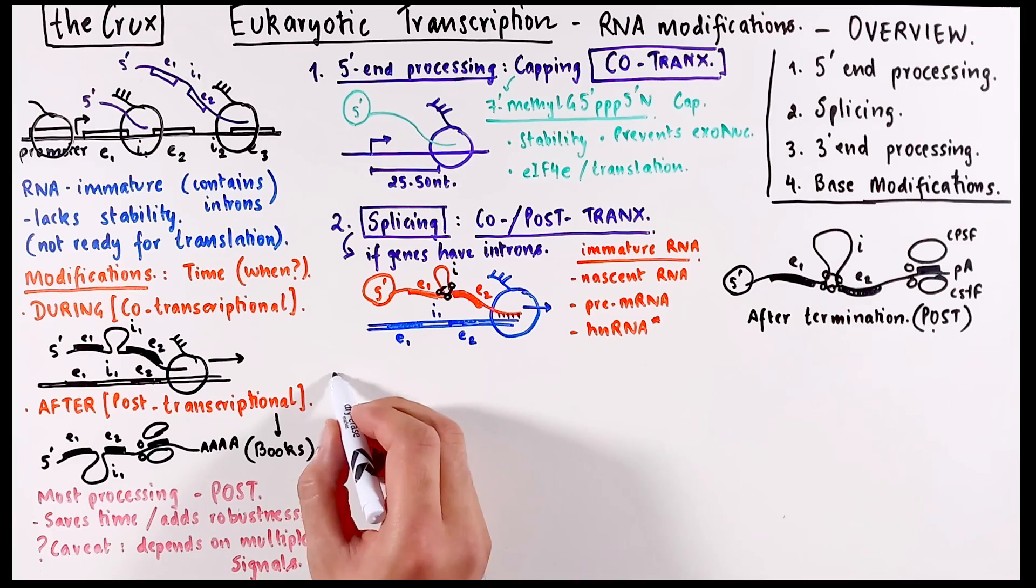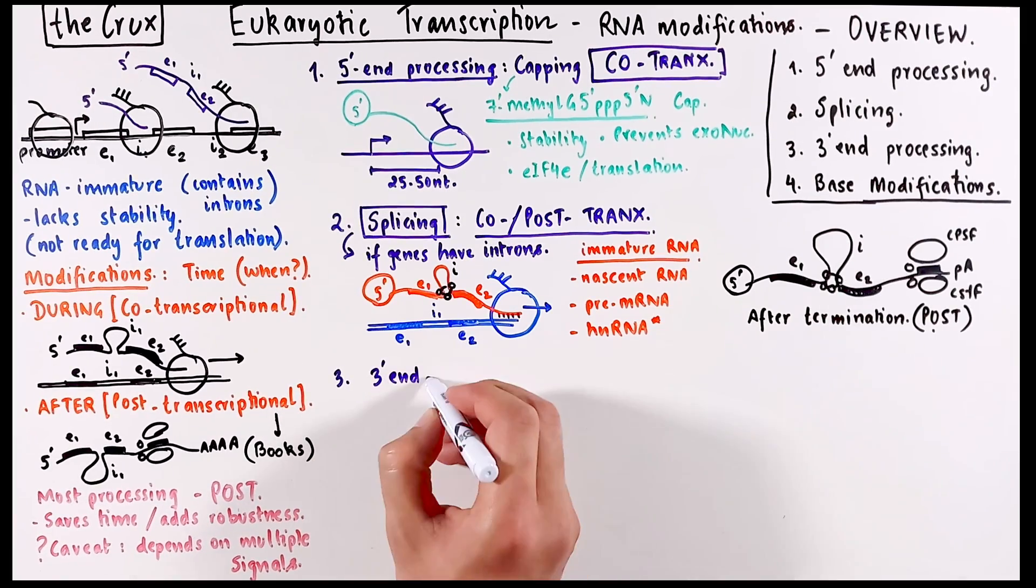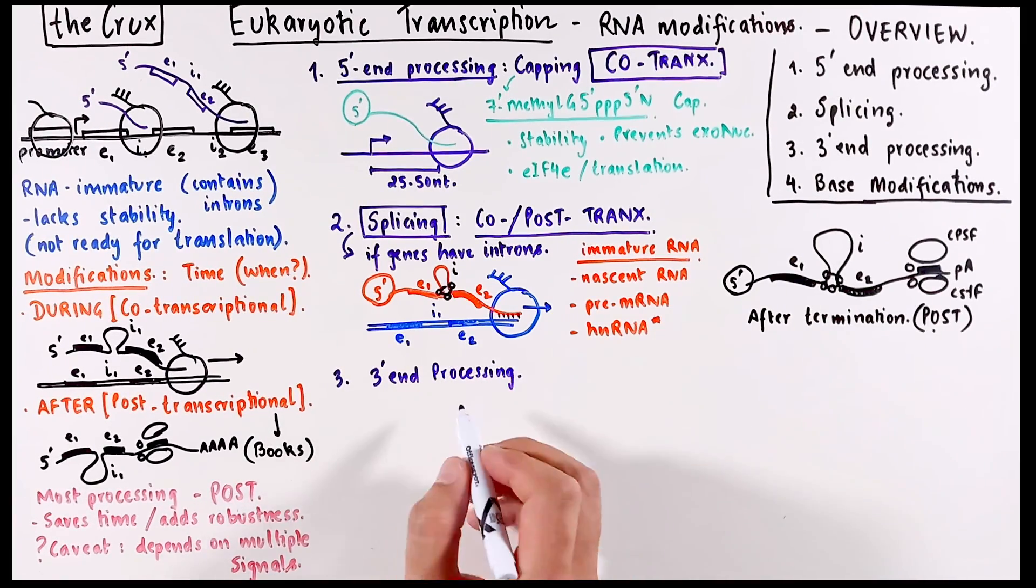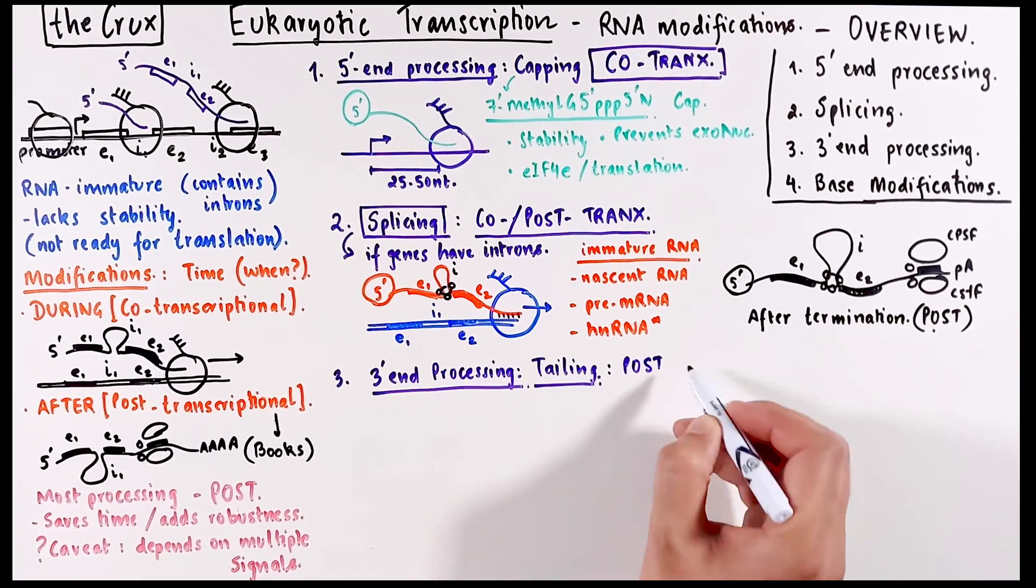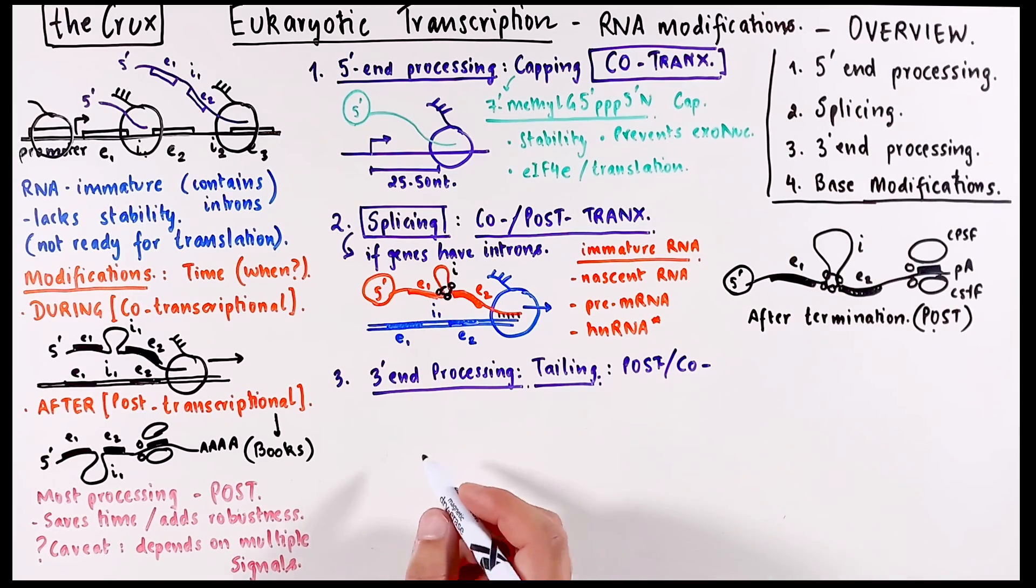The third important RNA modification is the 3' end processing, also referred to as 3' end tailing. This process can also be either post- or co-transcriptional.